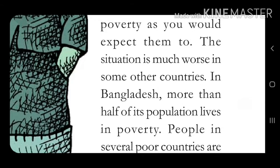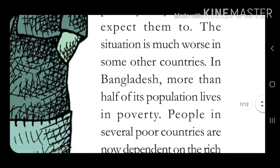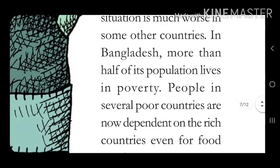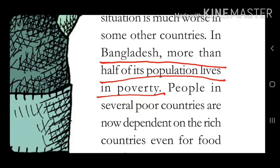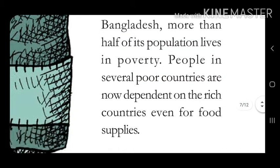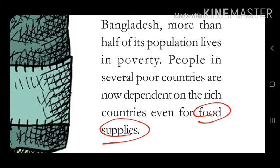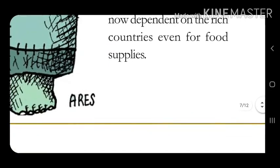The situation is much worse in some other countries. In Bangladesh, more than half of its population lives in poverty. People in several poor countries are now dependent on rich countries — even for food supplies. उन्हें खाने के लिए भी rich countries पर depend रहना पड़ता है, तभी वहाँ की public को food available हो पाता है।